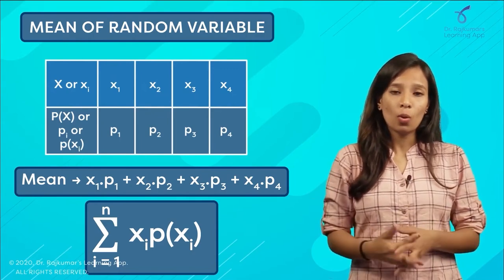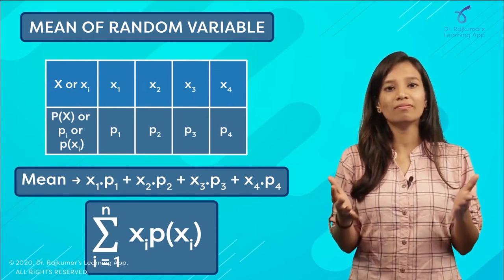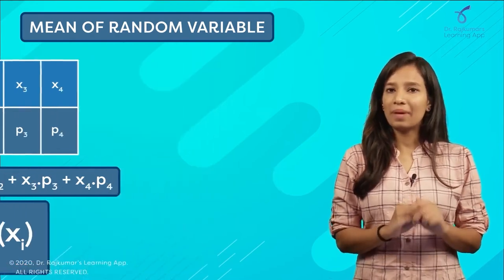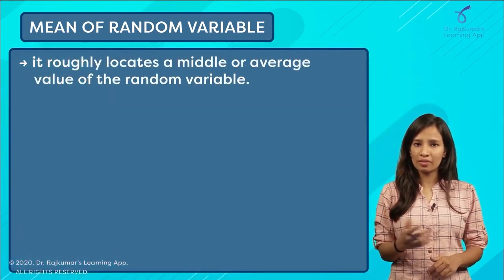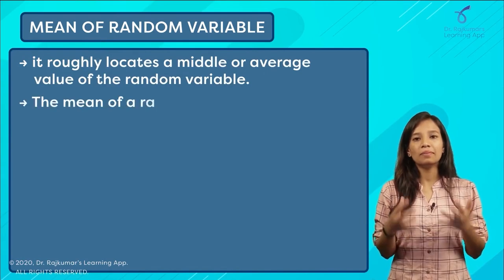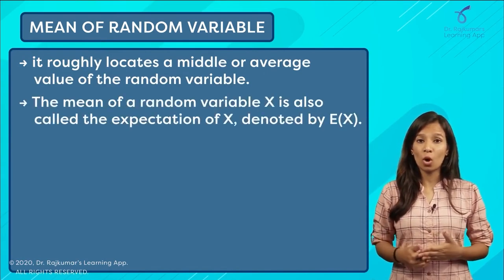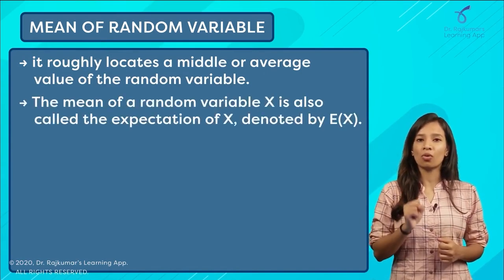It basically locates the middle value, or you can say the average value. This mean of a random variable is also called the expectation of the random variable.